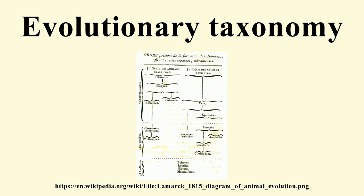Origin of evolutionary taxonomy. Evolutionary taxonomy arose as a result of the influence of the theory of evolution on Linnean taxonomy. The idea of translating Linnean taxonomy into a sort of dendrogram of the animal and plant kingdoms was formulated toward the end of the 18th century, well before Charles Darwin's book On the Origin of Species was published. The first to suggest that organisms had common descent was Pierre-Louis Moreau de Maupertuis in his 1751 Essai de Cosmologie.